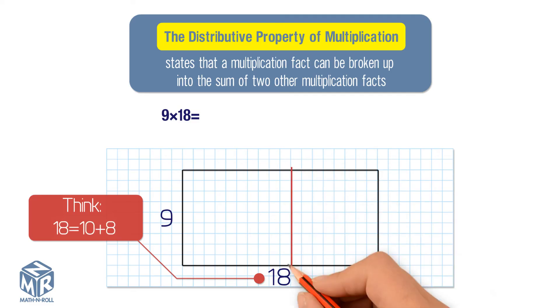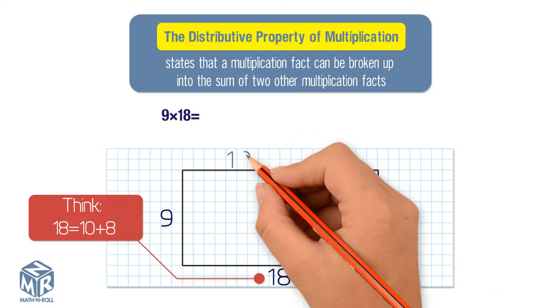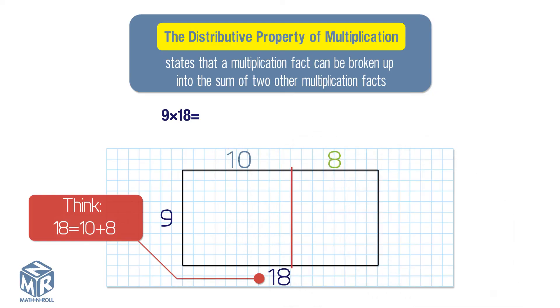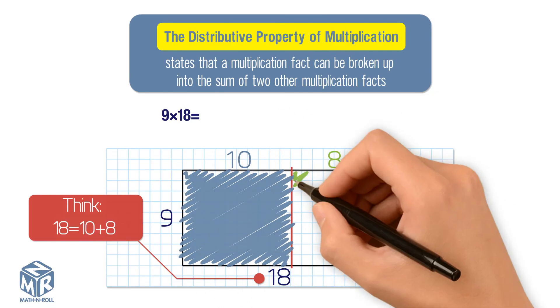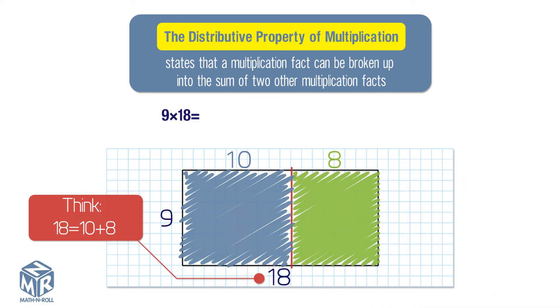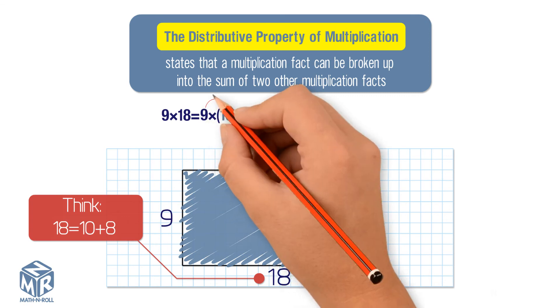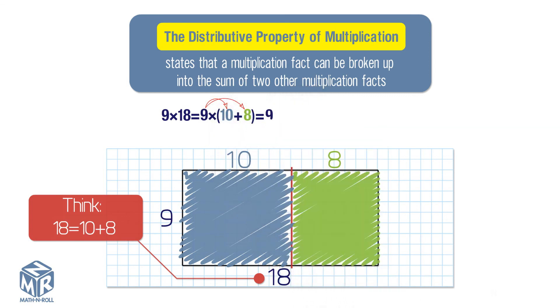Break apart the model to show 9 times 10 plus 8. Label and shade the smaller rectangles using two different colors. Use the distributive property. Find the product that each smaller rectangle represents.